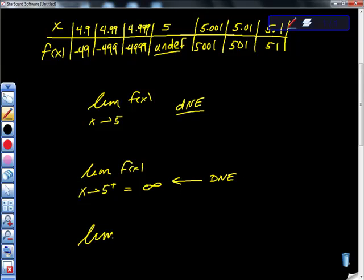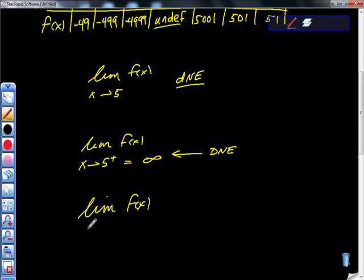And lastly, we can say that the limit of f of x as x approaches 5 from values less than 5 equals negative infinity. Remember, negative infinity is also not a number. And therefore, it's a description of why it does not exist.